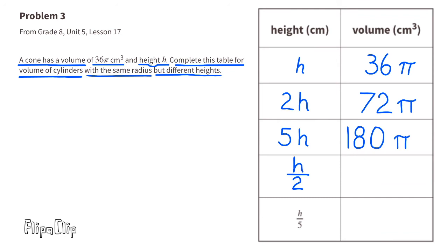The next one is h over 2, that means the height divided by 2. Since we're dividing the height by 2, we have to divide the volume by 2. 36 divided by 2 is 16, so when the height is h/2, the volume is 16π cm³.